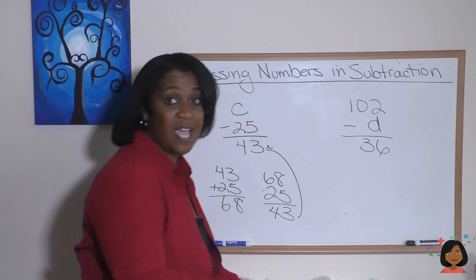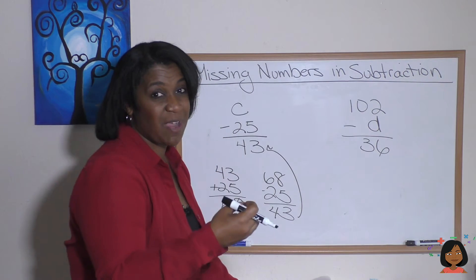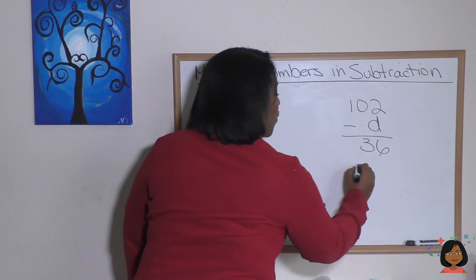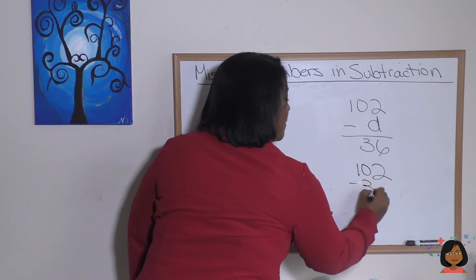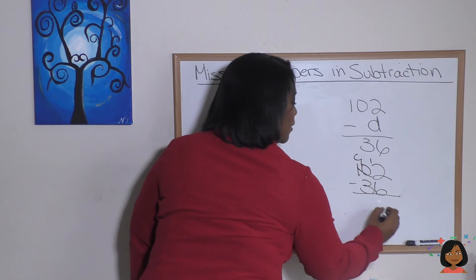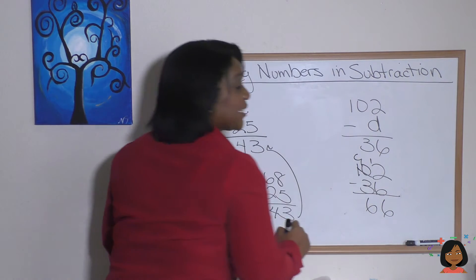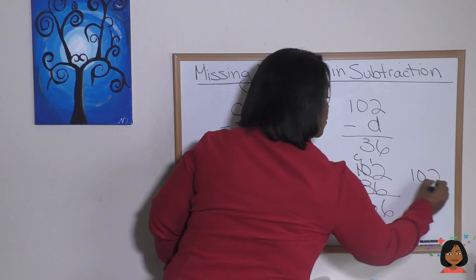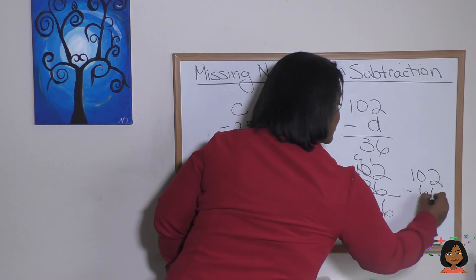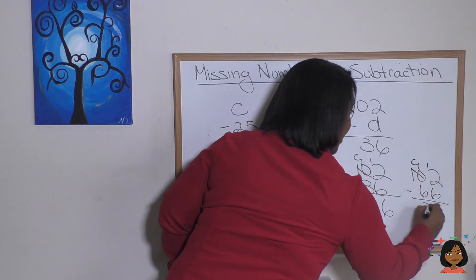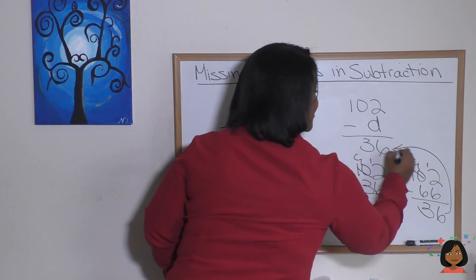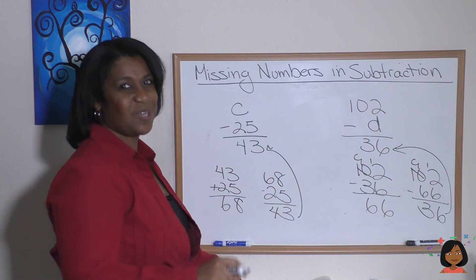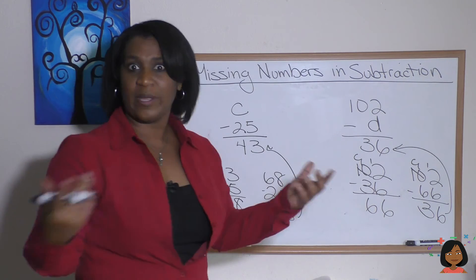Let's head over here. We have a missing subtrahend. When we have a missing subtrahend, subtrahend subtract. So we're going to subtract to find the answer: 102 minus 36. Here we go, we have 66 as an answer. Let's go ahead and put that back in: 102 minus 66, and we get 36 as an answer. It is correct! And what do we do here? We get a missing subtrahend, so we subtracted to find the answer.